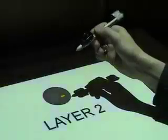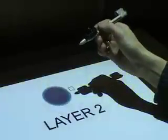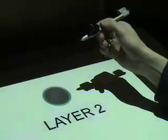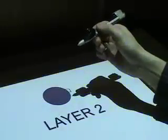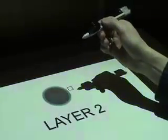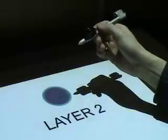Finally, the third technique is Crossing, where the pen enters the object and then exits it close to the entering point to select.